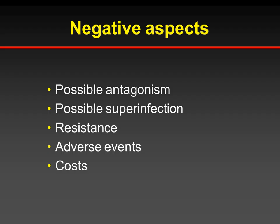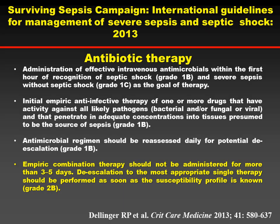There are also negative aspects of combination treatment. First, possible antagonism. Second, possible superinfection with resistant organisms — another issue that must be considered. Third, adverse events: combining two drugs means the adverse events of both. And also cost, though this is more a problem of the past since most drugs are now generic and cost is no longer a major concern for antibacterials.